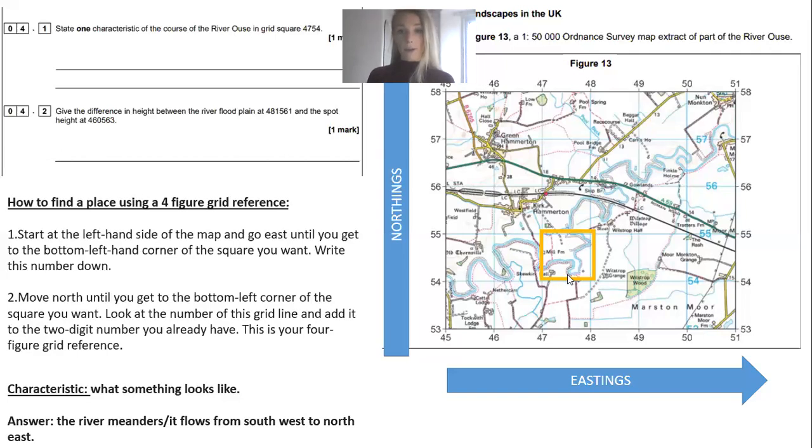As you can see in this grid square, the river is meandering, bending its way around this open flood plain which looks to be in the lower course of the river, as there are very few contour lines suggesting it's wide and flat. You could have simply written 'the river meanders' or you could have written it flows from the southwest to the northeast. By characteristic we are referring to what something looks like—what are its typical features.